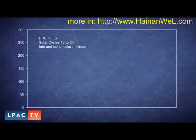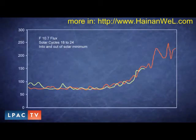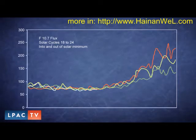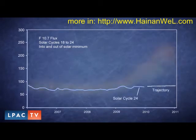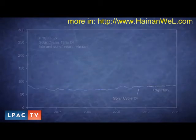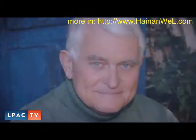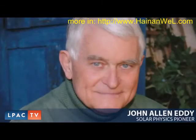Periodicities show up in more than sunspots alone. For example, here is a map put together by David Archibald on the emission of radio waves from the sun — what is called the F10.7 flux. Here you can see a similar minimum trajectory in cycle 24's activity relative to cycles 18 through 24.